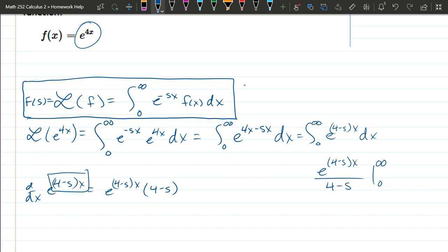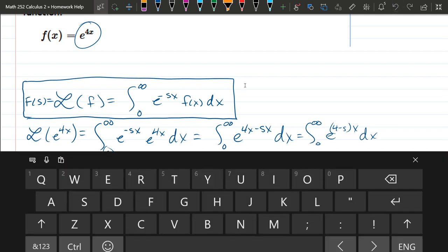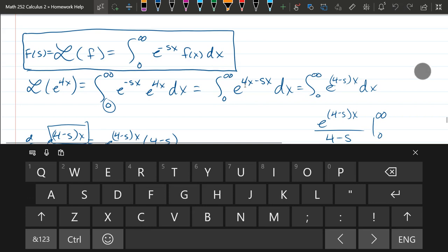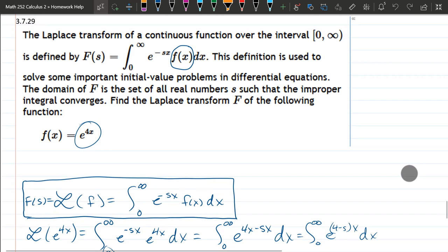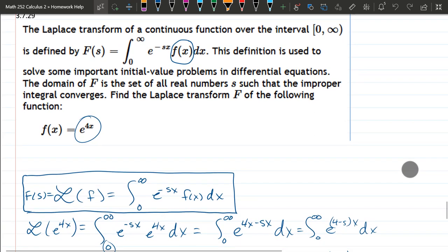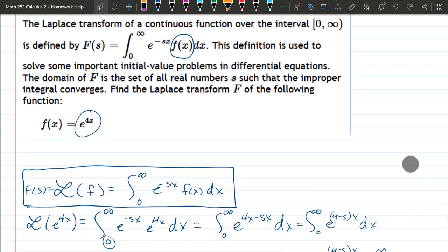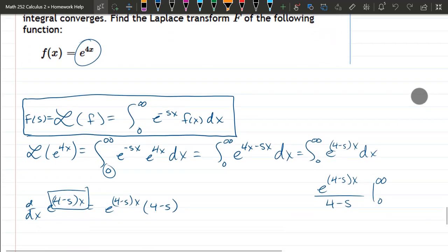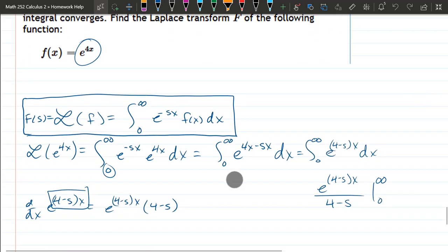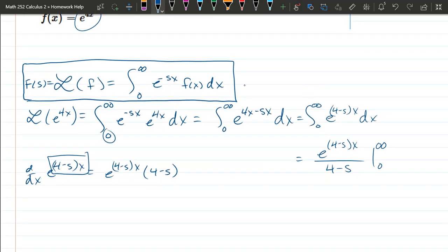All right, what variable do 0 and infinity get plugged into? Well, we have 0, we have infinity, and we have an x integral, so they're going in for the x variable, not for the s. So we plug these in. We have, well, we can factor out the 1 over 4 minus s.